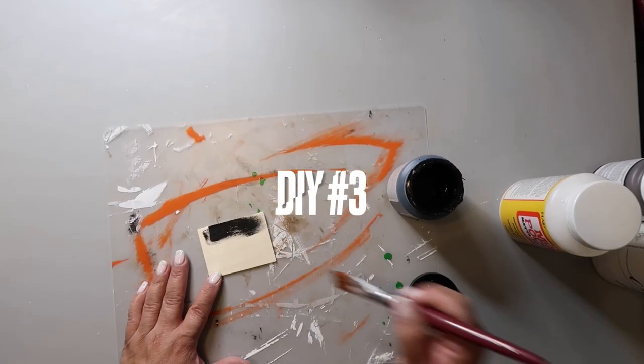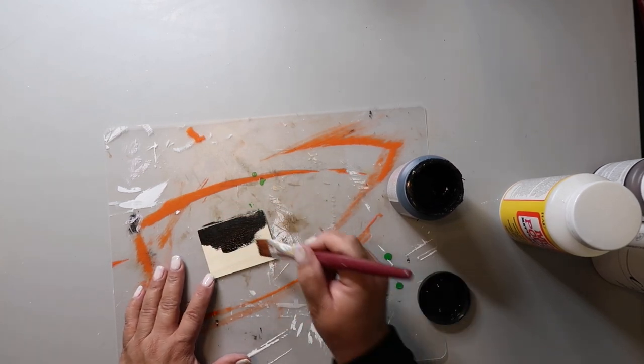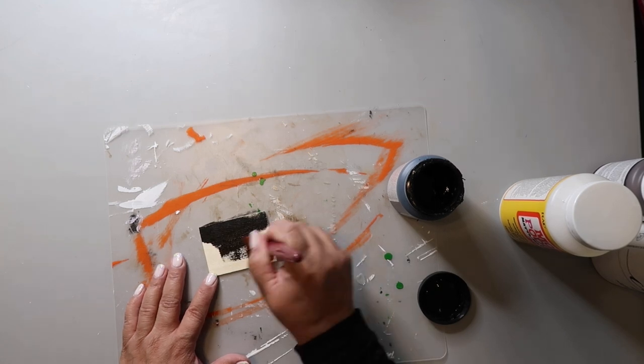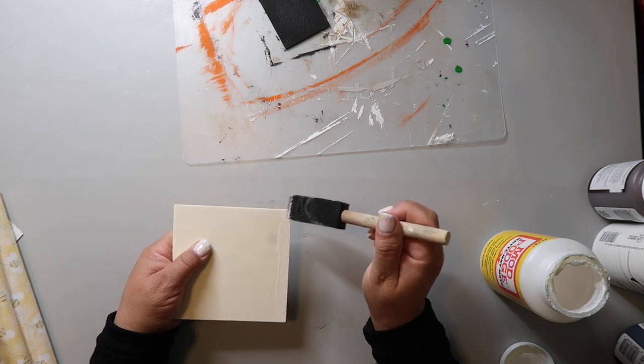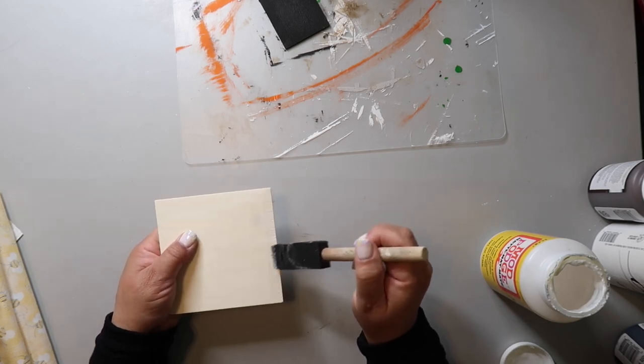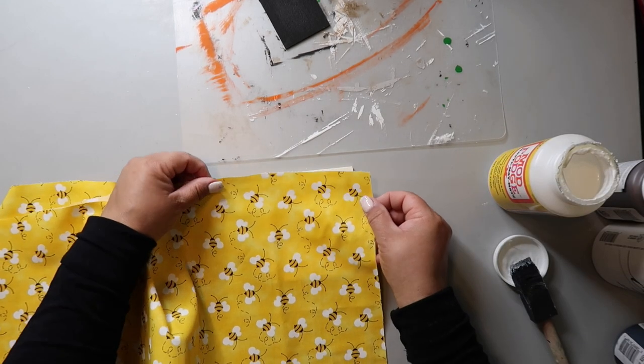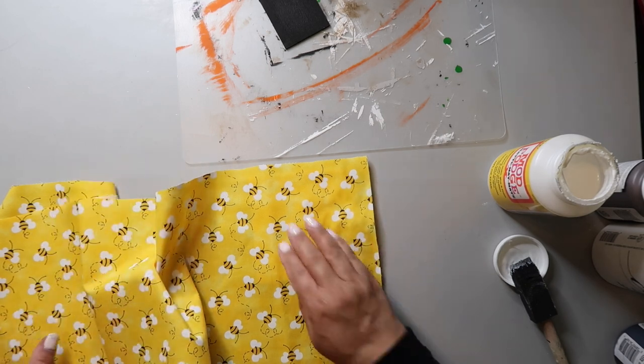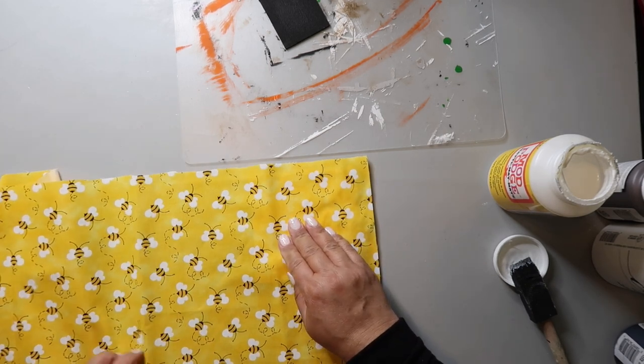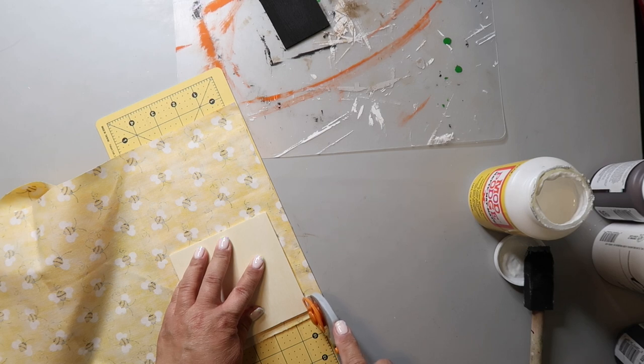For DIY number three, I'm starting off by painting this little wood piece with folk art paint in the color rich black. I'm going to Mod Podge some fabric onto this wood square that came from Dollar Tree. And I start off by putting some on the very edge first and I take this really cute fabric that I got from Hobby Lobby and place it carefully on top. Before I finish Mod Podging though, I flip it over and I cut the excess fabric from around the square.